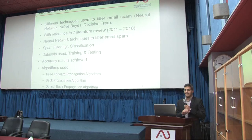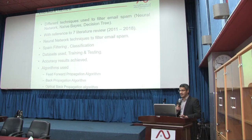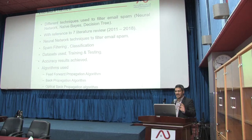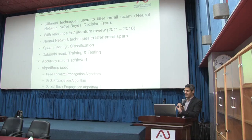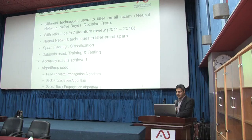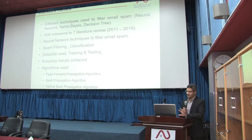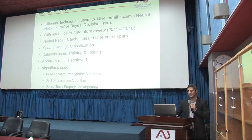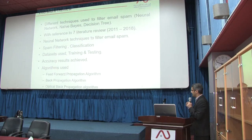In the literature review, there are multiple classification techniques that can classify spam emails: Neural Network, Naive Bayes, and Decision Trees, among other classifiers. I specifically selected Neural Network as the technique to filter email spam. I focused on the classification of emails, the datasets used — whether UCI or others — the training and testing techniques previous literature reviews used, and the algorithms, whether feedforward propagation, backpropagation, or optical backpropagation algorithm, and the results that each classifier achieved.